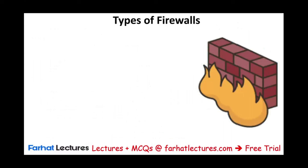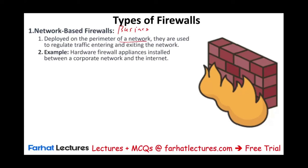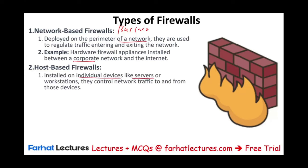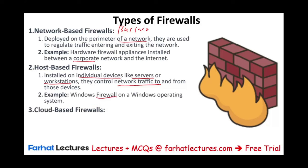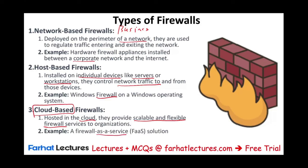There are three different types of firewalls. First, the network-based firewall — think of it as a business-type firewall deployed at the perimeter of the network, regulating traffic entering and exiting. These are hardware firewall appliances installed between a corporate network and the internet. Second, the host-based firewall — installed on individual devices like servers or workstations to control network traffic to and from those devices. An example is Windows Firewall. Third, the cloud-based firewall — the firewall is hosted in the cloud, providing scalable and flexible firewall services to organizations, also known as firewall as a service (FaaS).